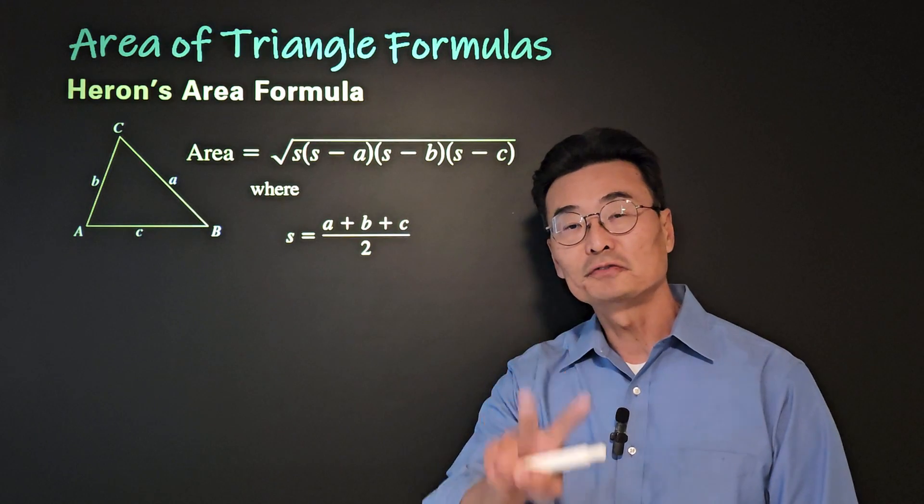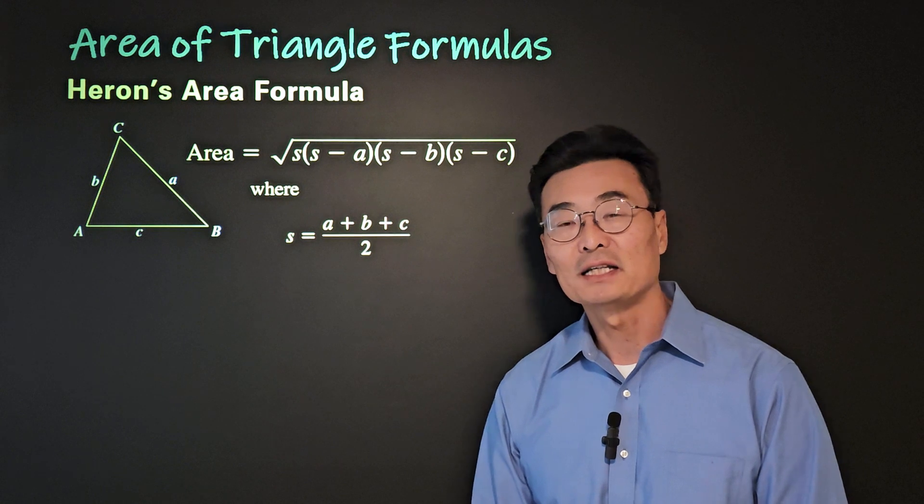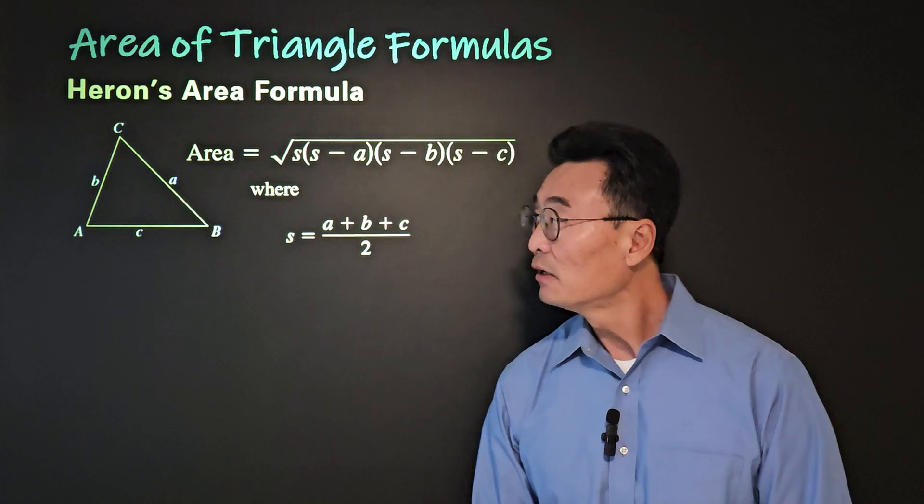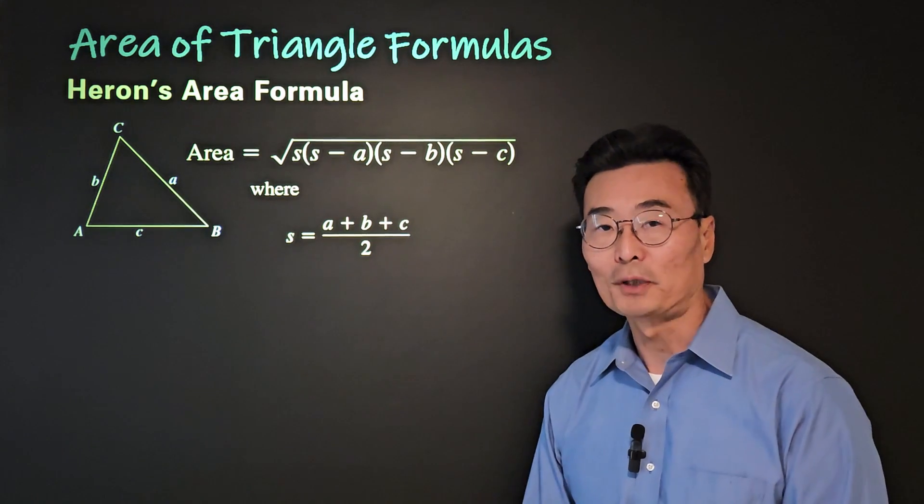In this lesson, I'd like to show you two formulas that you could use to find the areas of a triangle, especially if it's not a right triangle. First is the Heron's formula.